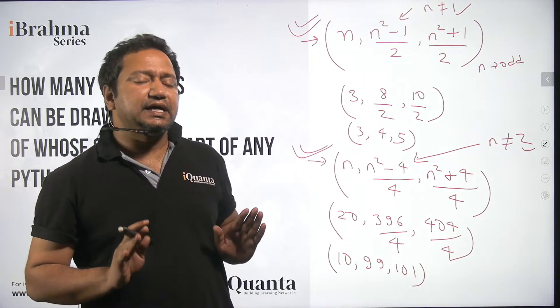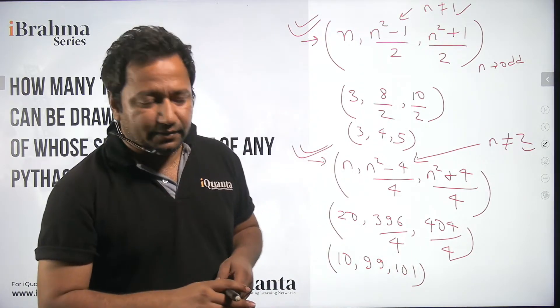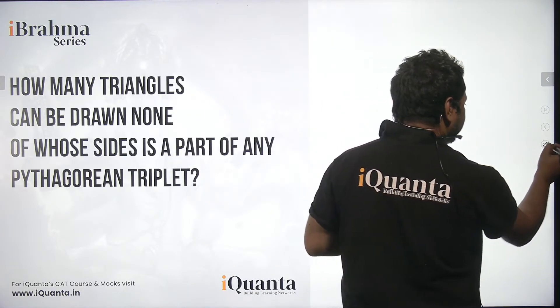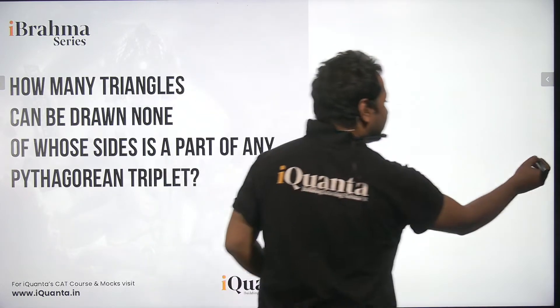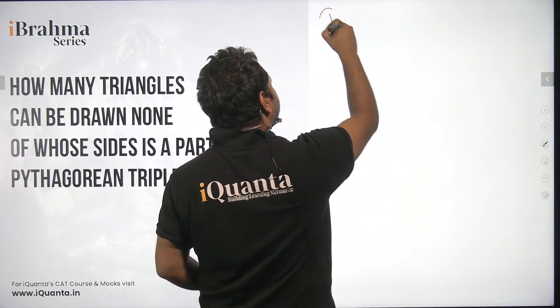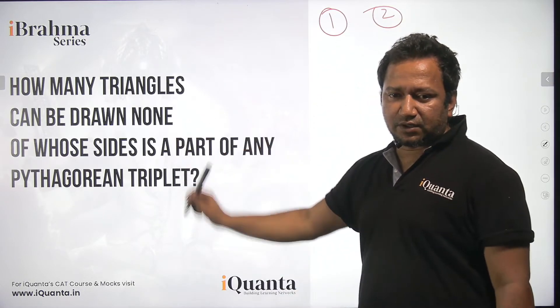Now once we have established this that 1 and 2 cannot be the side of any Pythagorean triplet, that means our life is very easy now. So basically we have to calculate the triangles whose sides are either 1 or 2. That will be the answer of this question.